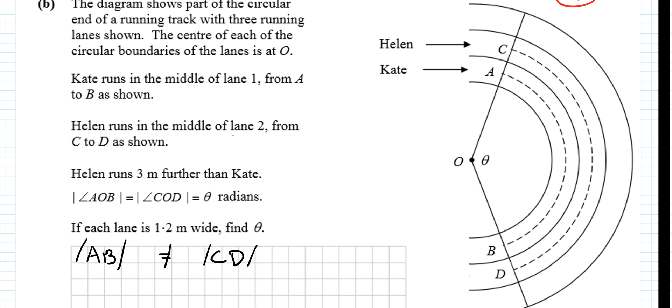Helen runs in the middle of lane 2. So Helen runs further. Helen runs 3 metres further than Kate. Okay, well, what's shorter?